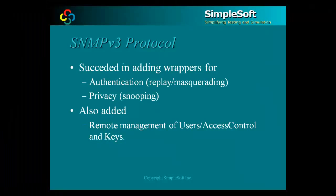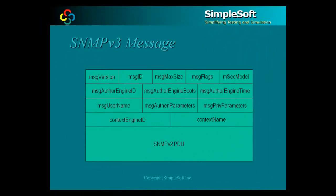Finally, in 1998, a new set of documents specified the security and authentication enhancements to the SNMP protocol that were accepted. They also included remote management of users, their keys and privileges. SNMP v3 is now the official SNMP standard, and SNMP v1 and v2c are now designated as historic by the IETF. SNMP v3 added wrappers around the older SNMP v2 PDU structure to include support for authentication and privacy. The authentication provided safeguards against masquerading and replay attacks, while privacy added encryption to keep the contents of the packet secret from wire snooping.